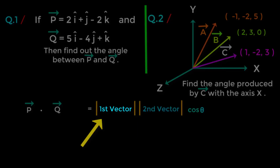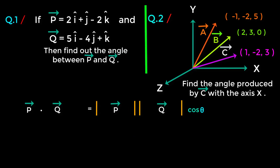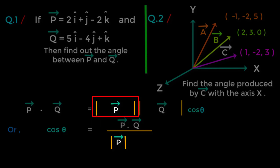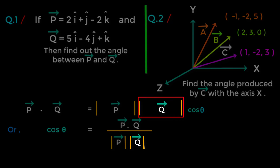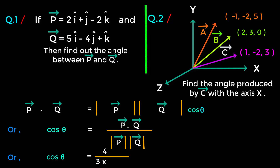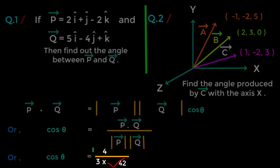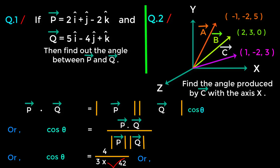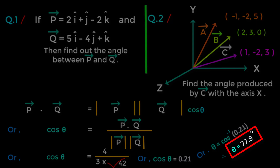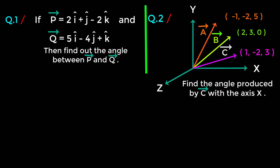So cos theta equals p vector dot q vector divided by the magnitude of p vector times the magnitude of q vector. Substituting the values — as learned in vector part 2 — we get cos theta equals 4 over 3 times square root of 42, which gives cos theta equals 0.21. Therefore theta equals cos inverse of 0.21, which gives theta equals 77.9 degrees. This is the angle between the two vectors.